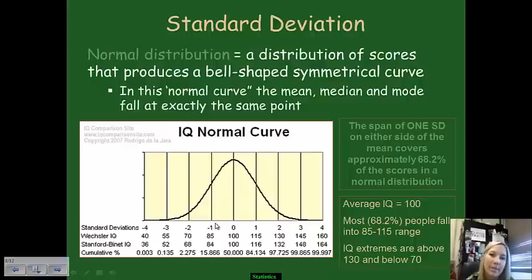A normal standard deviation distribution is a bell-shaped symmetrical curve, meaning that you have 50% of your scores going this way, 50% of your scores going this way. The span of one standard deviation on either side of your mean line, which is right here, is going to approximately cover 68.2% of your scores within that bell curve. So if your average IQ is 100 and that is your mean right here, that line, most IQ scores then will fall within one standard deviation of this bell curve average of 100.